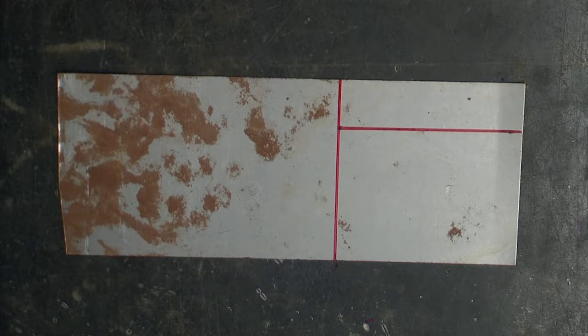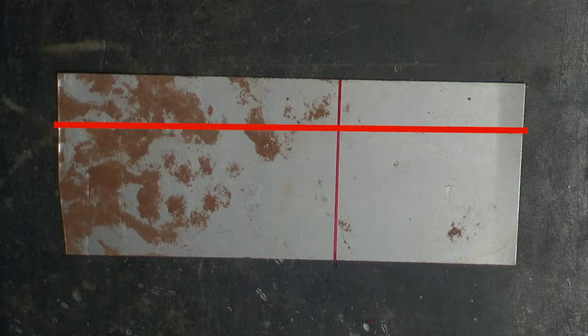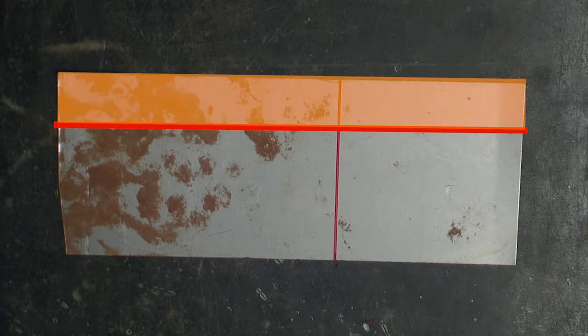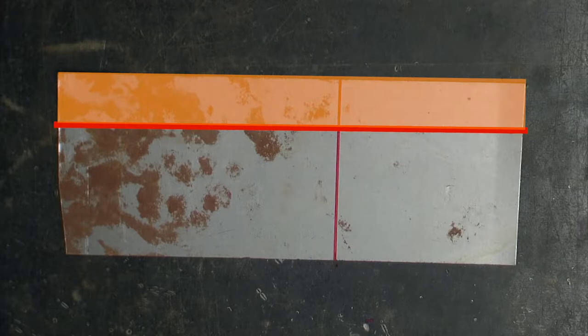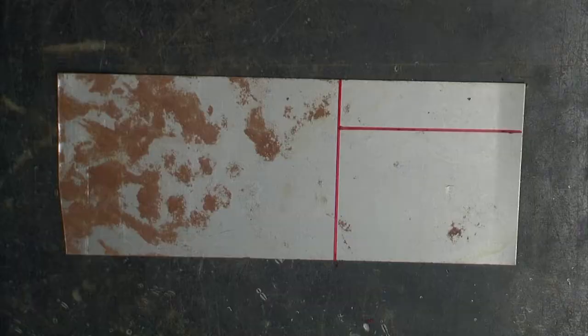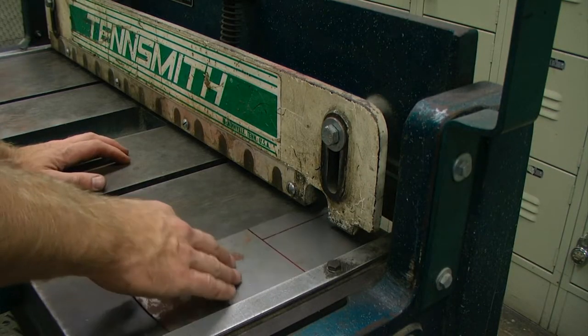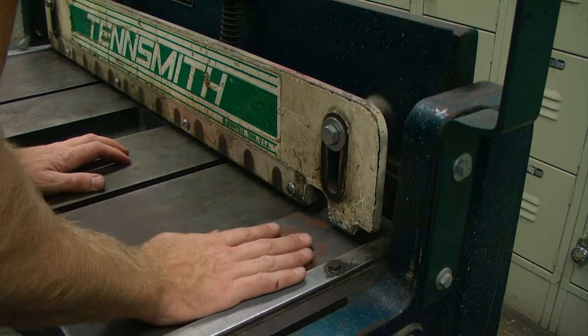If I were to cut the horizontal line first I would be wasting much more material to get my 4 by 3 inch piece. Using the squaring shear I will cut that down to size.